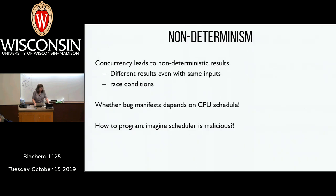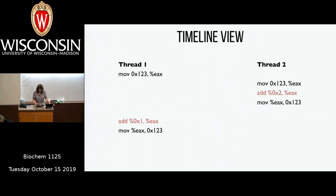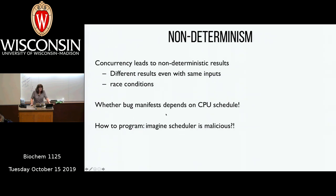We were getting non-deterministic results: sometimes the balance variable was incremented by three (correct), sometimes by one or two. We get different results with the exact same inputs because of timing variations and race conditions depending on what the scheduler decides to do. You really have to get in the mindset that the scheduler is malicious — once it gets to try a billion times on your code, it's going to find the worst possible interleaving of instructions.